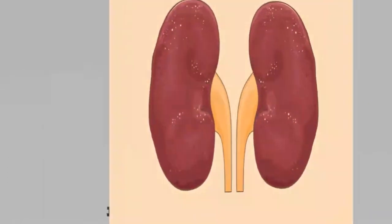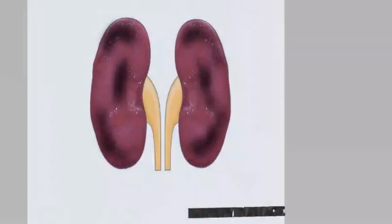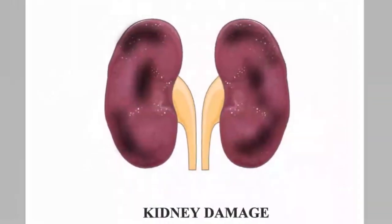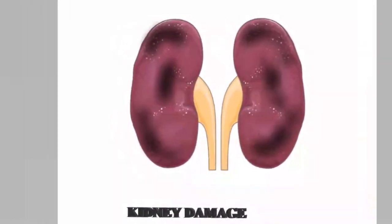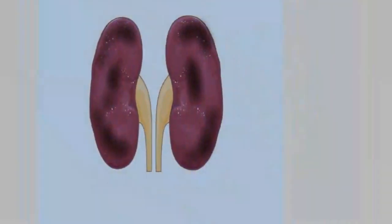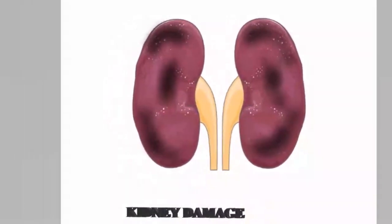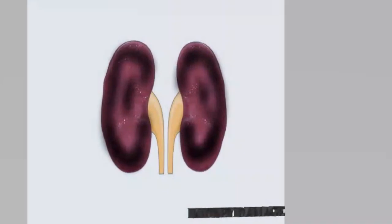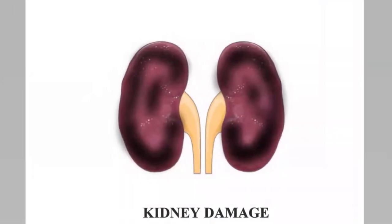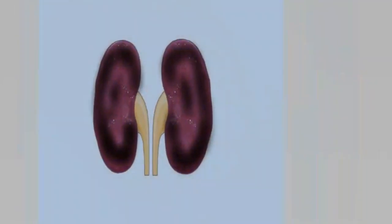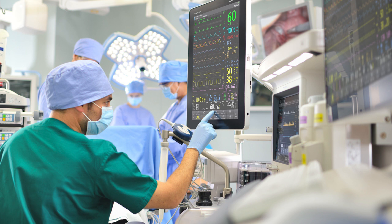Urine microalbuminuria is most often caused by diabetes, high blood pressure, cirrhosis, and lupus. Urine microalbuminuria is associated with an approximate doubling of the risk of major cardiovascular events and a tripling of risk for hospitalization for congestive heart failure.